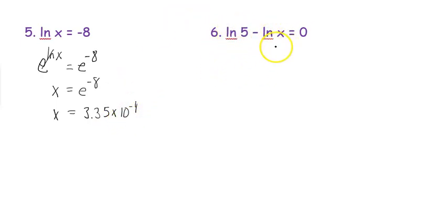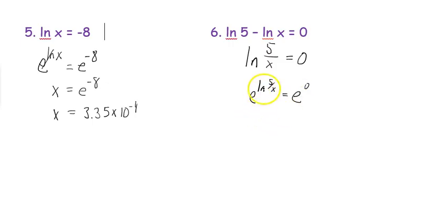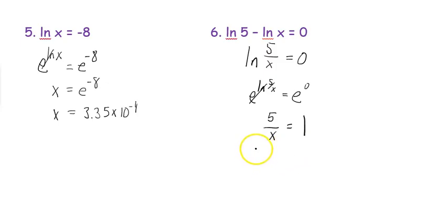For number 6, you have two natural logs to combine. A minus between logs originally came from division, so you can combine them as the natural log of 5 over x. Now the natural log part is by itself, so e both sides: e to the natural log of (5 over x) equals e to the 0. The e and natural log cancel, giving 5 over x equals 1, since anything to the 0 power is 1. Multiply both sides by x: 5 equals x.